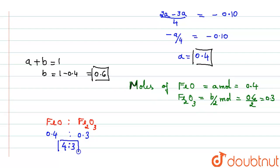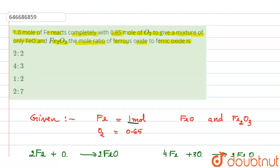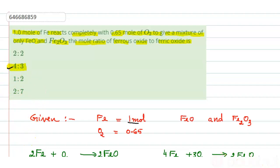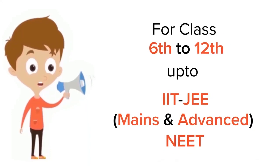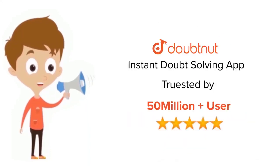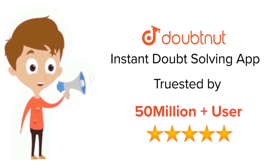Checking the options: option A is 2:2, option B is 4:3 — this is the correct answer, option C is 1:2, option D is 2:7. Therefore the right answer is option B. Thank you. For class 6–12, IIT JEE, and NEET level, trusted by more than 5 crore students — download DoubtNet app today.